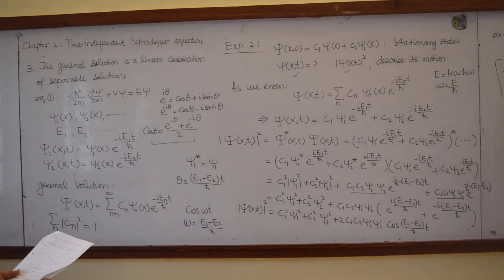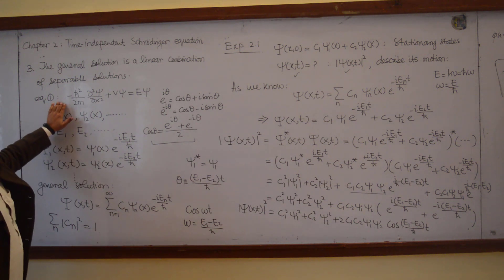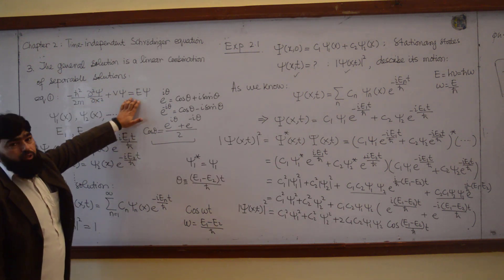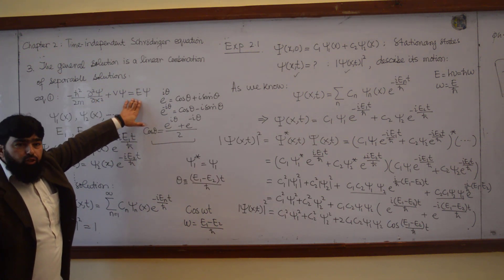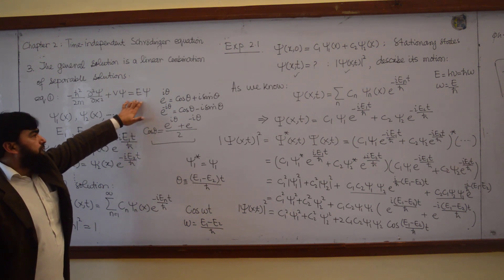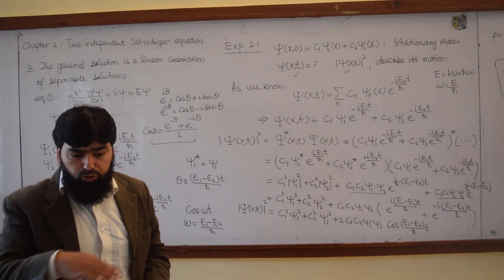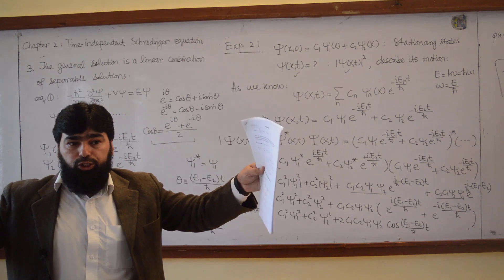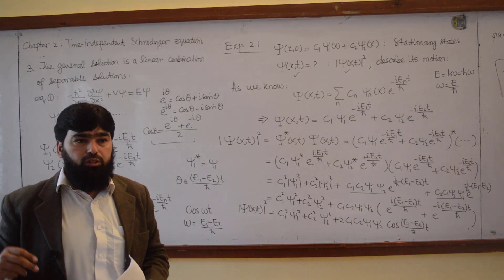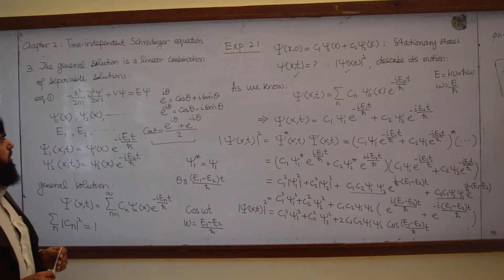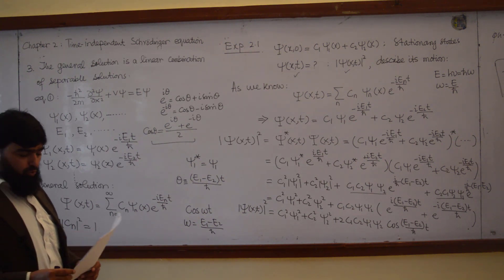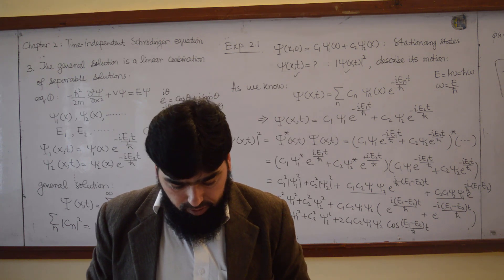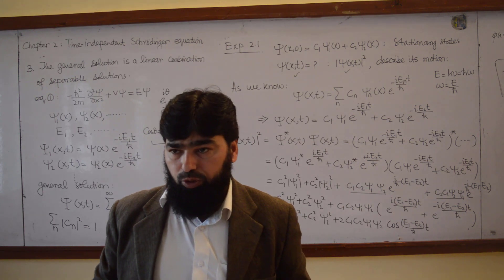Our remaining task is to solve the time-independent Schrödinger equation on a particular geometry. We will consider the infinite square well — a particle free to move inside a box whose walls are at infinite potential, so the particle cannot escape. Hopefully tomorrow we will solve this and see how stationary states emerge as solutions.